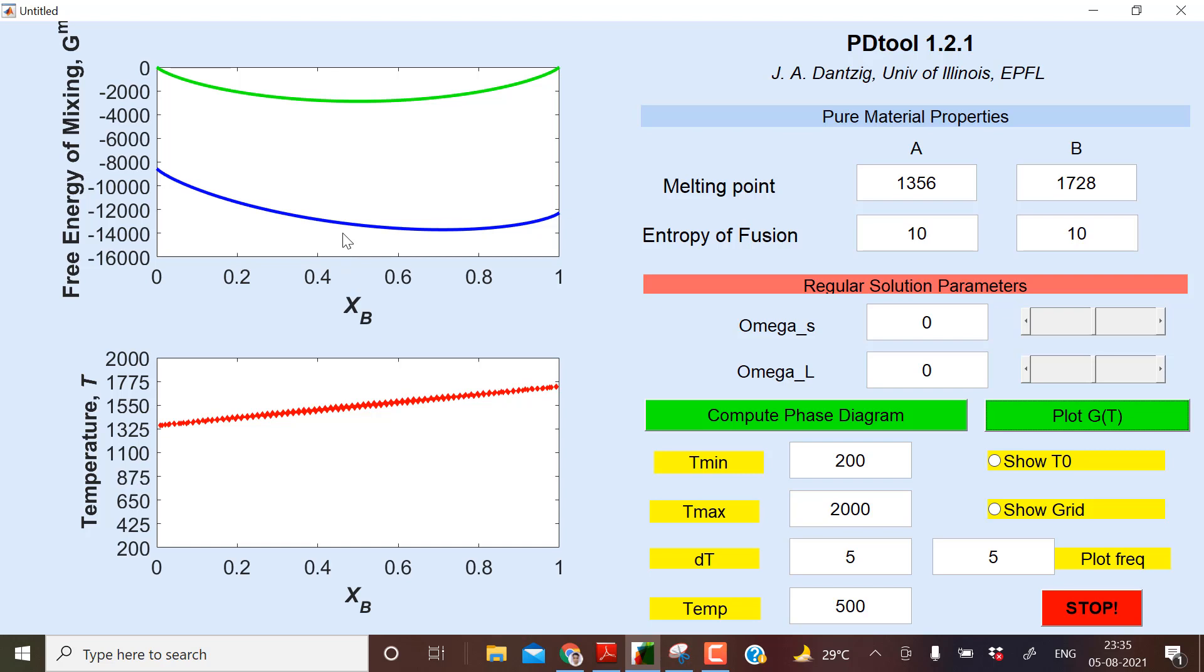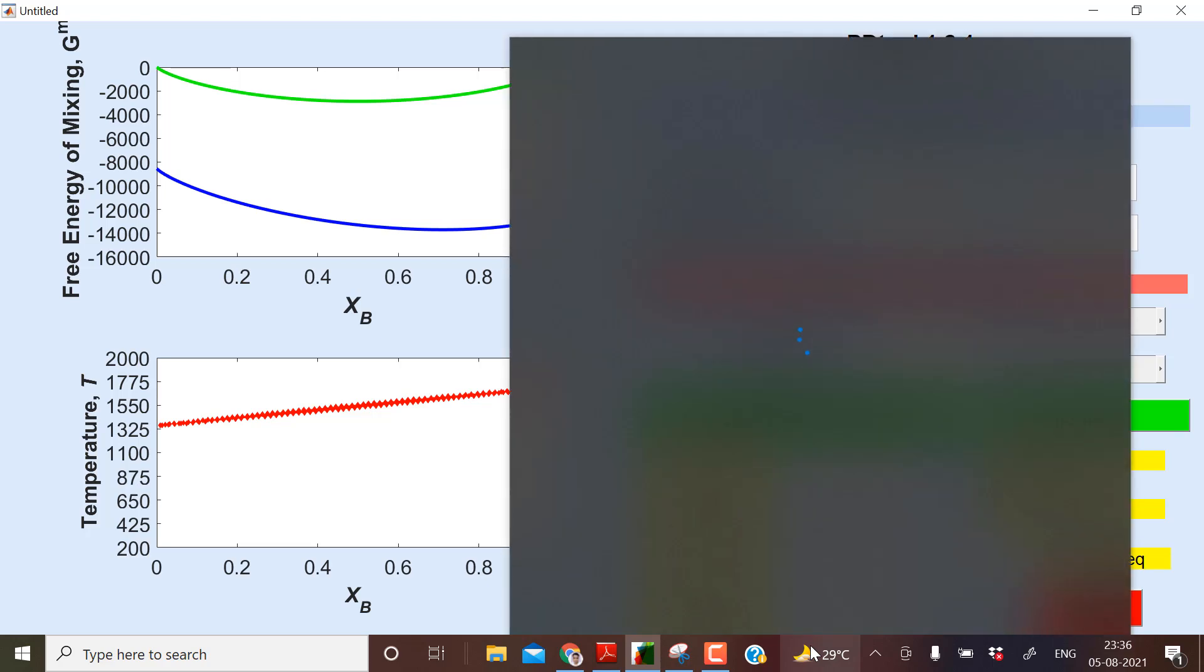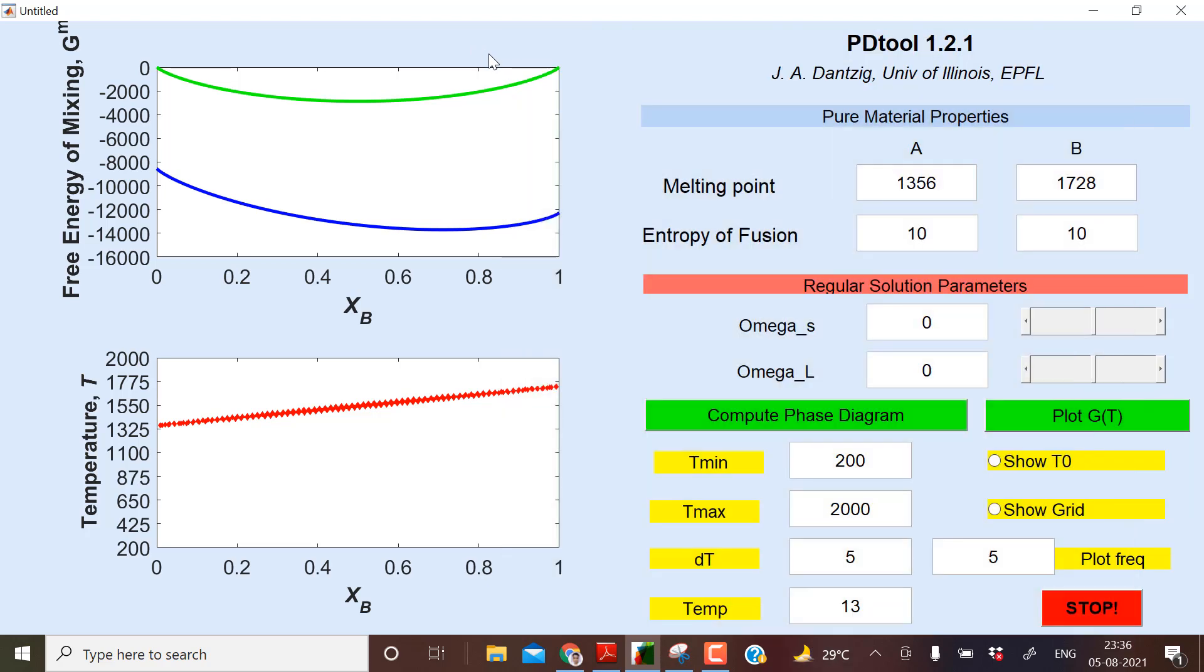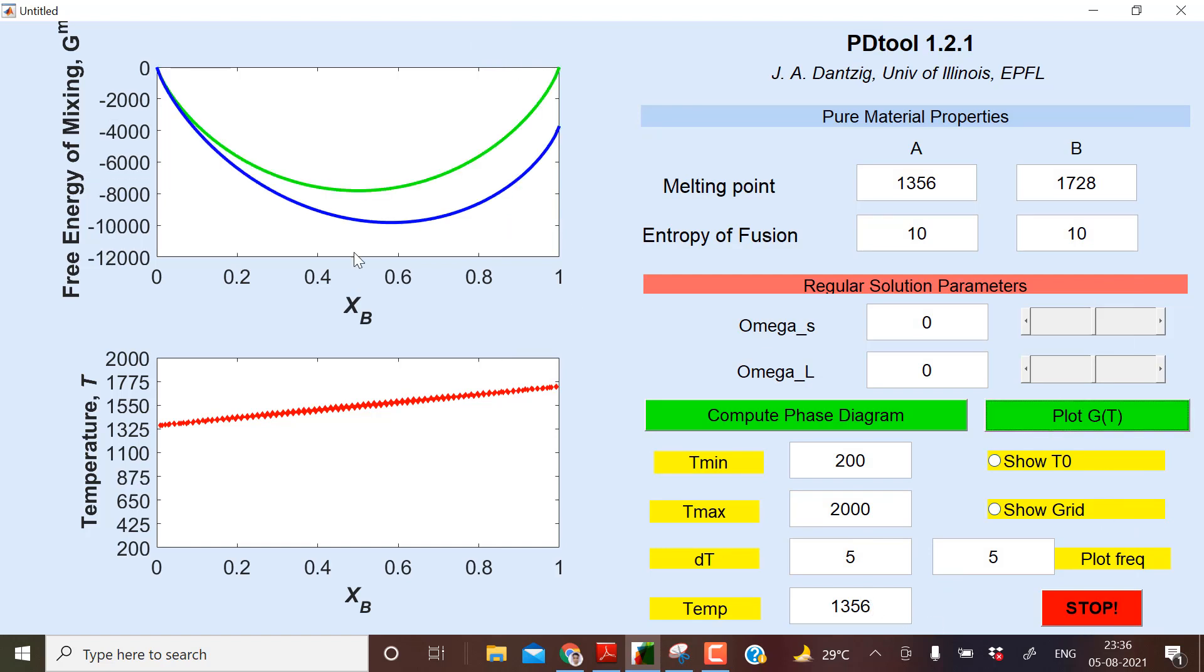Yeah, so at 500 you can see a diagram like this. This blue line is for solid and this green line is for liquid. So the free energy of this solid is minimum, so that is a stable one. So let me draw the free diagram exactly at the melting point of this A part, that is copper, that is 1356.